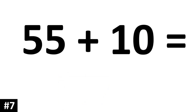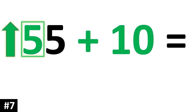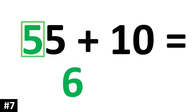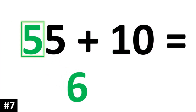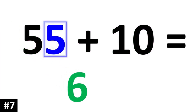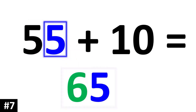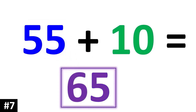55 plus 10: to add 55 plus 10, the tens digit of 5 is going to become a 6. And the ones digit, which is a 5, is going to stay the same. 55 plus 10 is 65.